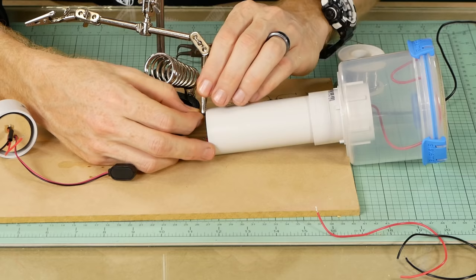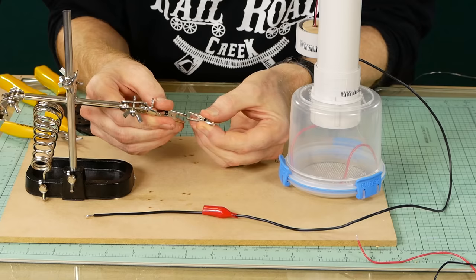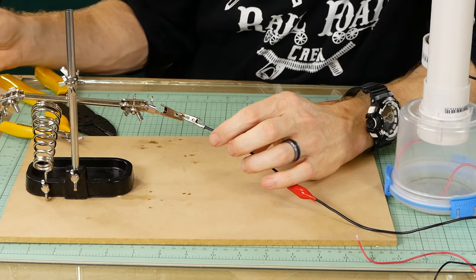Now we can connect the remaining two wires to the negative ion generator, and the last job we have to do to complete the static grass applicator is to install the alligator clip to the end of the negative charge wire.